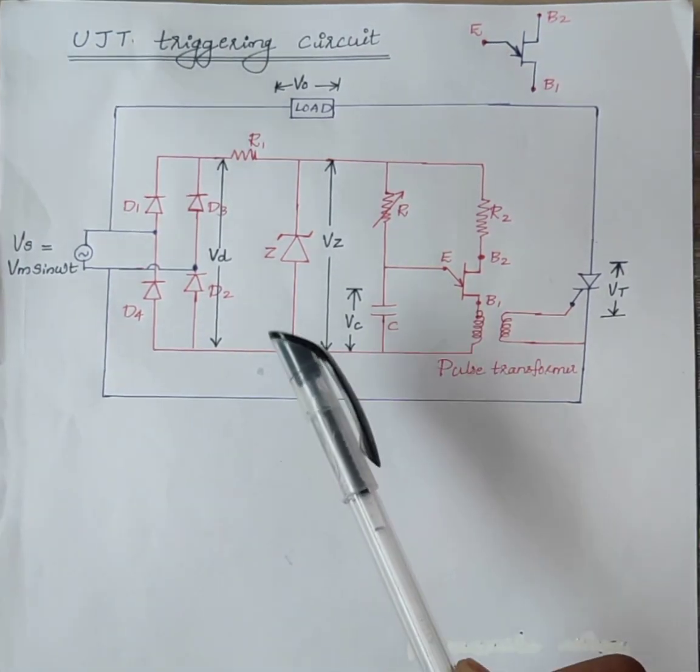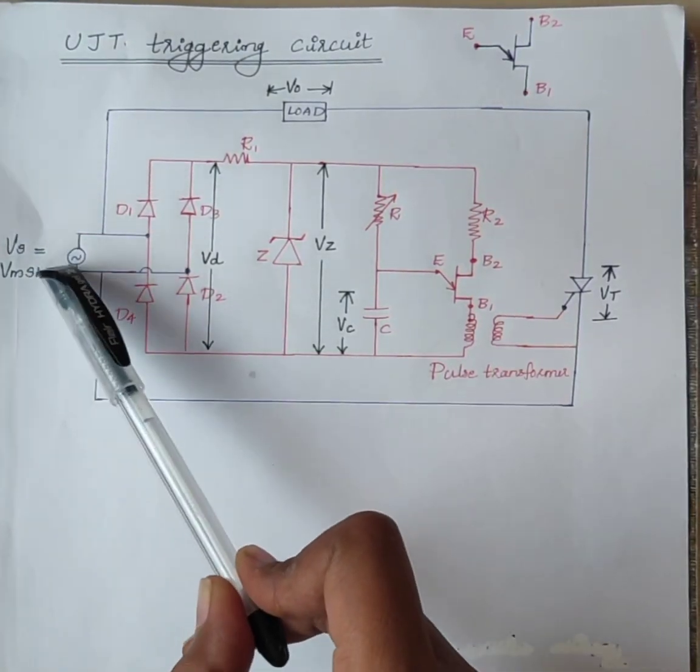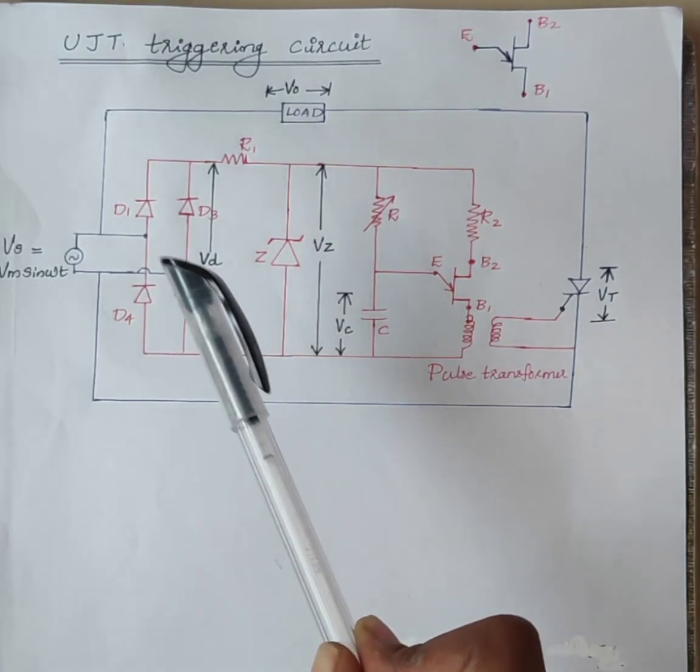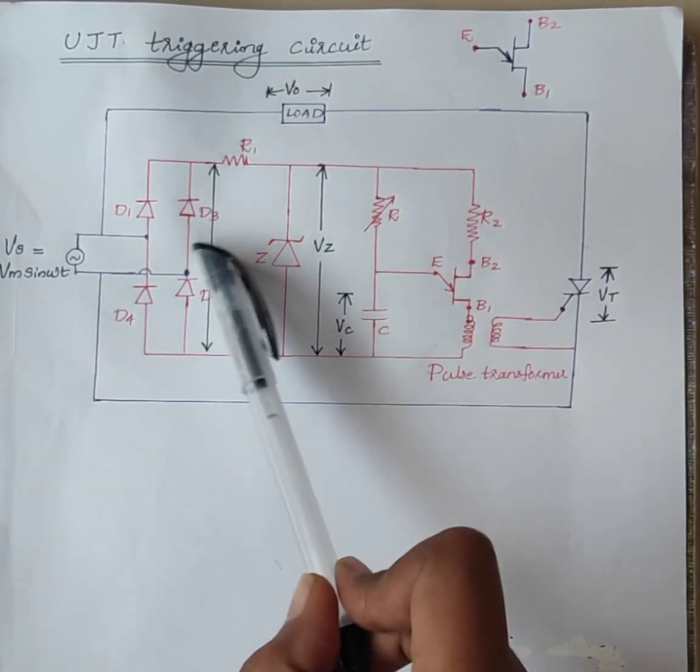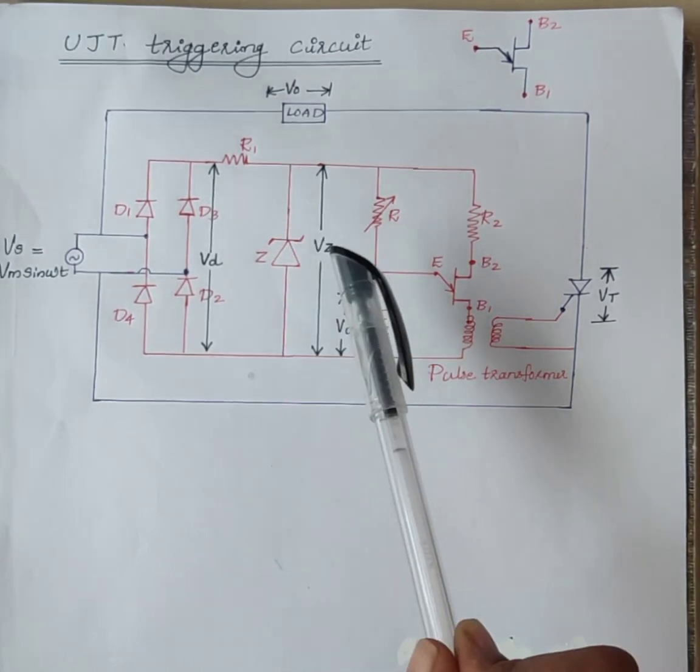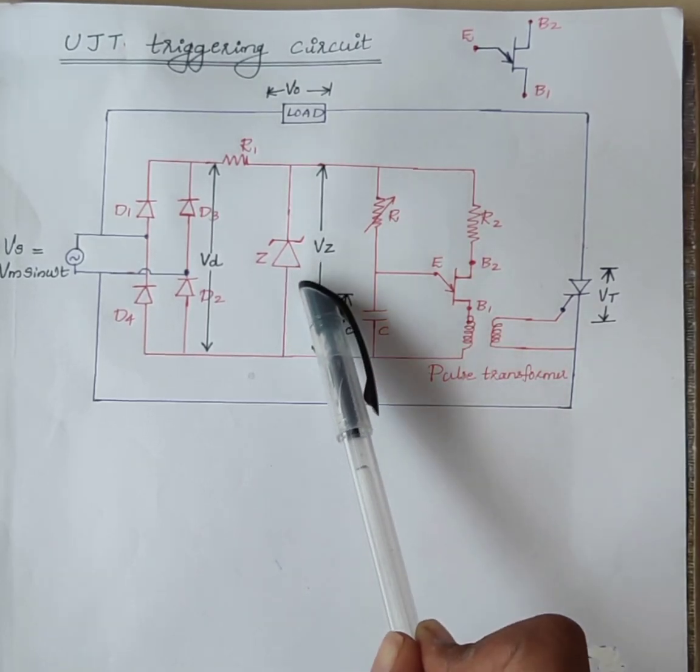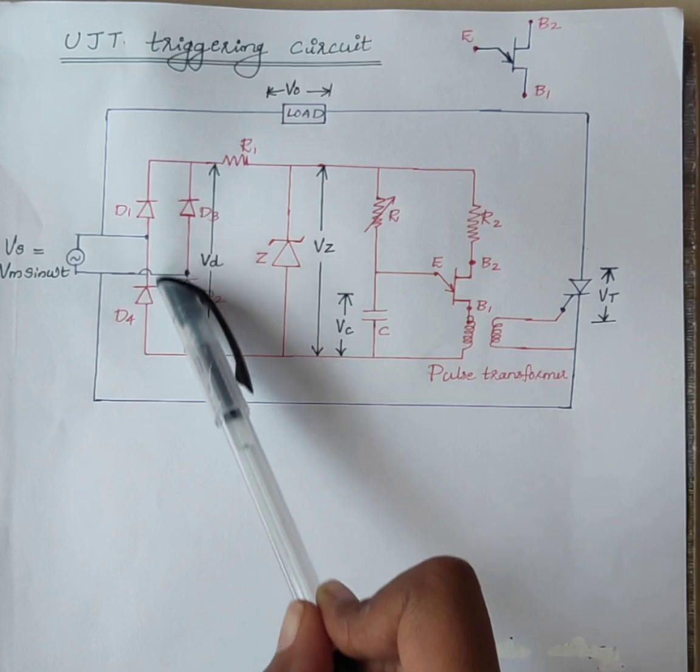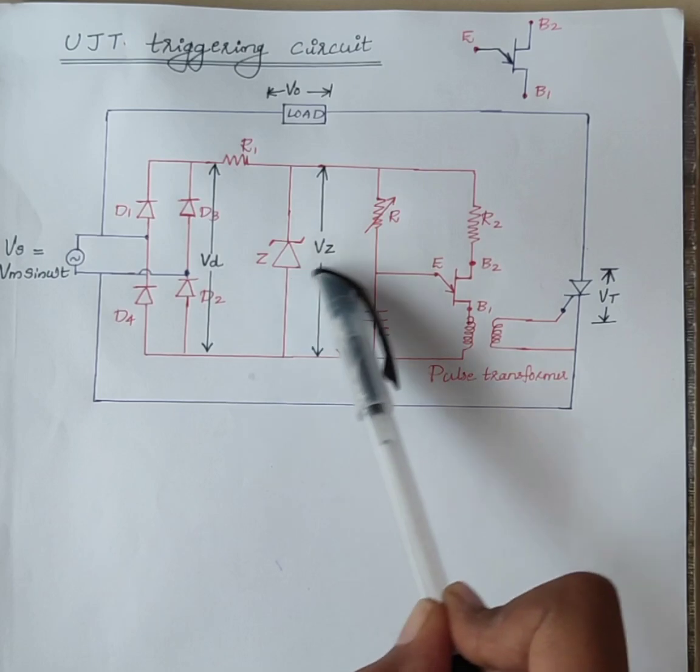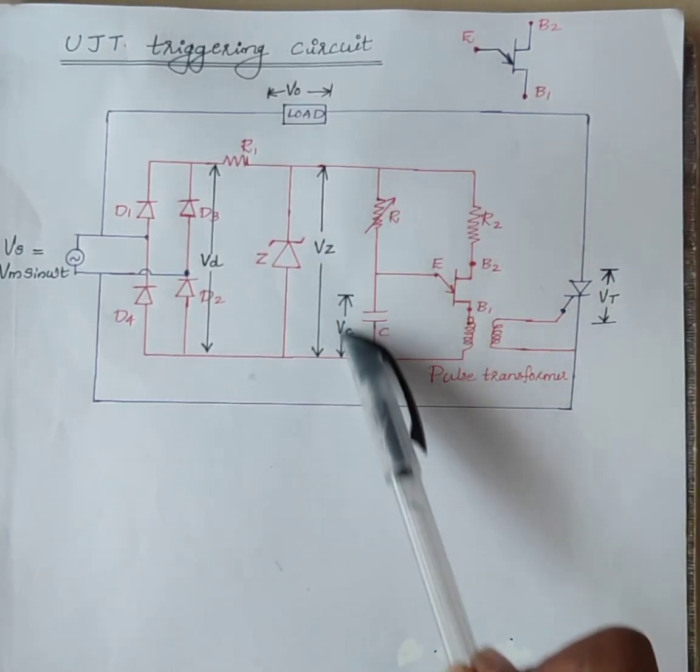First, we will discuss the working of UJT triggering circuit. The supply voltage VS is given to the bridge rectifier. The rectified voltage VD is applied to the zener diode. Zener diode acts as voltage regulator, so it is used to clip the rectified output voltage VD to a fixed voltage VZ. This voltage is applied to the charging circuit.